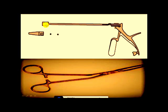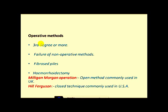Operative methods can be open or closed: hemorrhoidectomy and hemorrhoidopexy. These are done for third degree hemorrhoids or more, when there is failure of non-operative methods, or when there are fibrous piles. Hemorrhoidectomy can be open or closed. The Milligan-Morgan operation is an open method commonly used in the UK, and the Hill-Ferguson method is a closed technique commonly used in the USA.